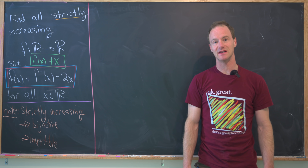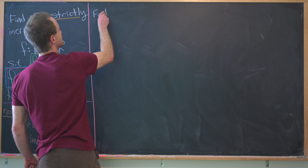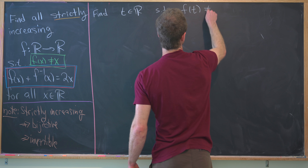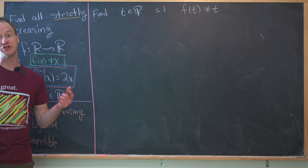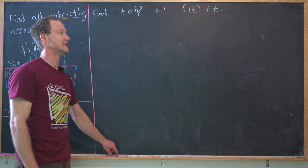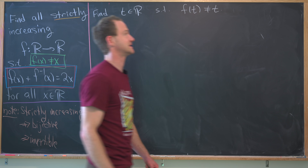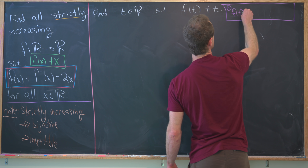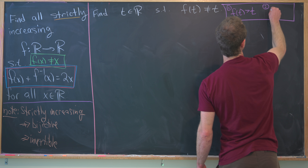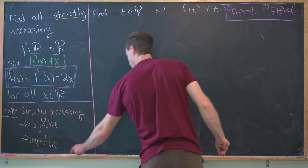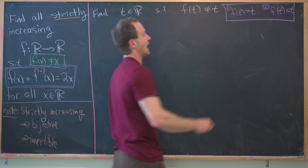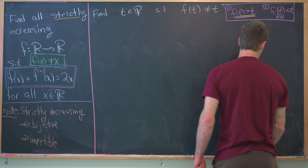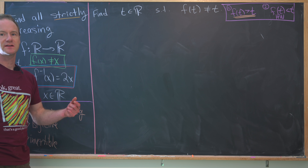Since we've assumed f is not the identity function, we can find some real number t such that f(t) is not equal to t. There are really two cases: either f(t) is bigger than t, or f(t) is less than t. I'm only going to do case one, where f(t) is bigger than t, and leave case two as an exercise, since they're very similar.